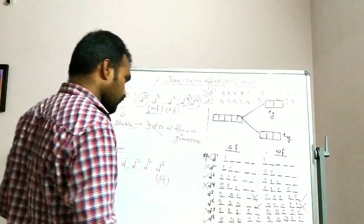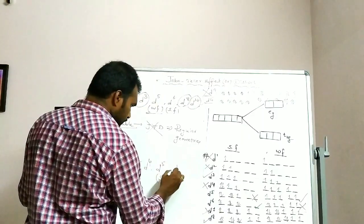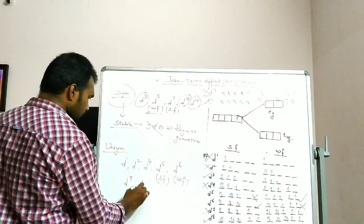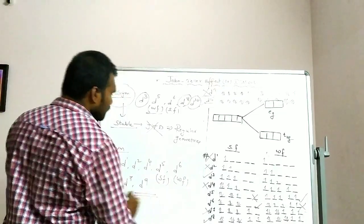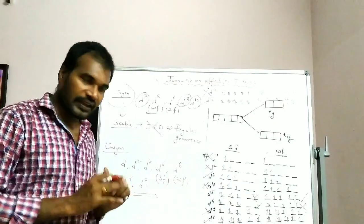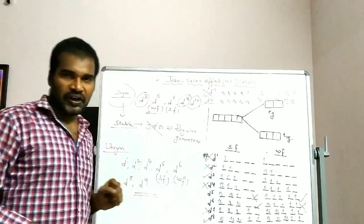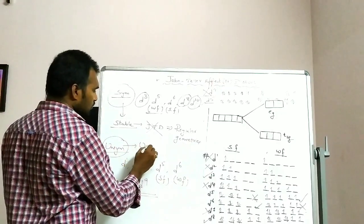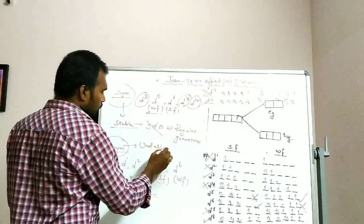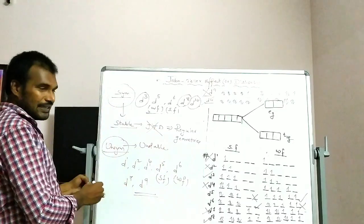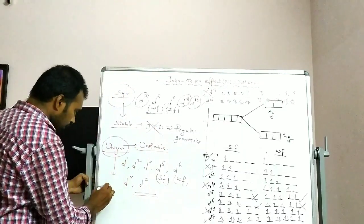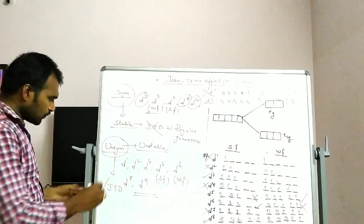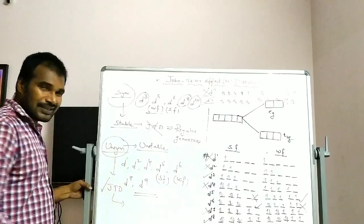The configurations having unsymmetrical configurations are D1, D2, D4, D5 in strong field, D6 in weak field, D7, and D9. These configurations are having unsymmetrical configuration, meaning they are unstable. To get stability, the Jahn-Teller distortion is observed in these configurations.